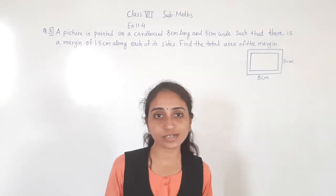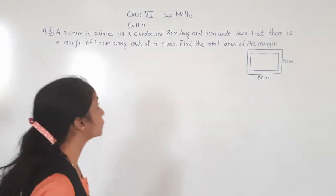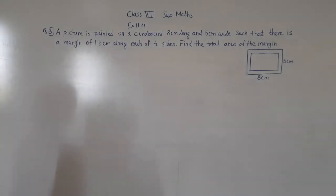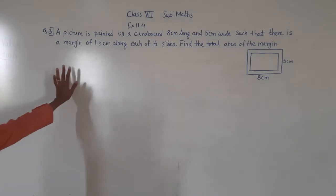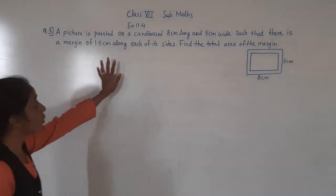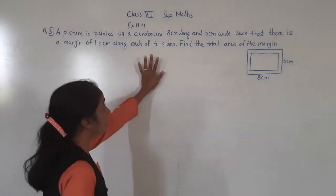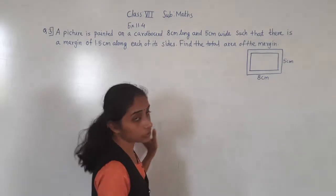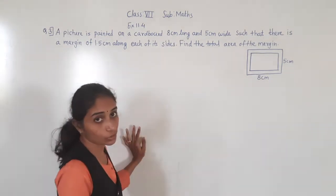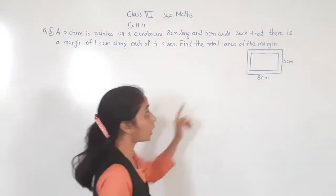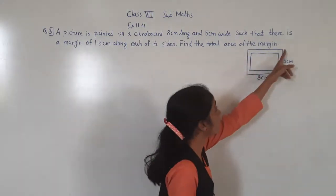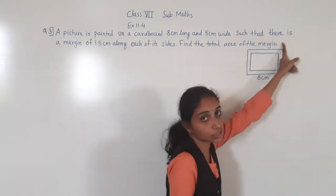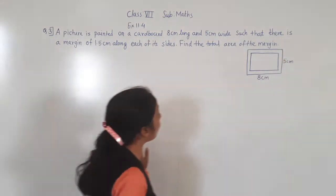Good morning students. Let's solve today exercise 11.4 question number 3. A picture is painted on a cardboard 8 cm long and 5 cm wide. Cardboard length is 8 cm long and 5 cm wide.